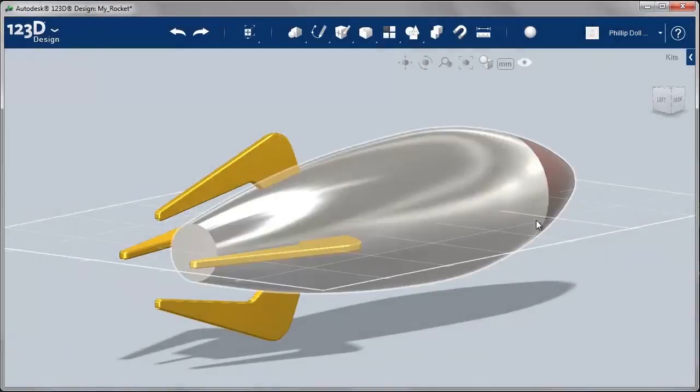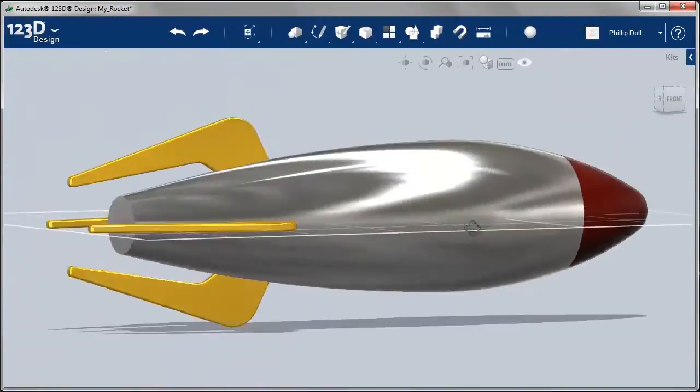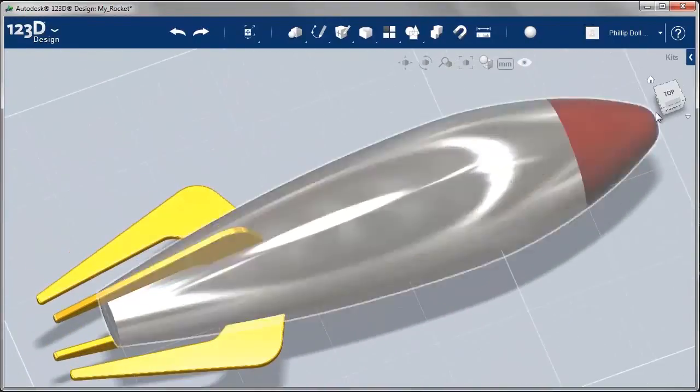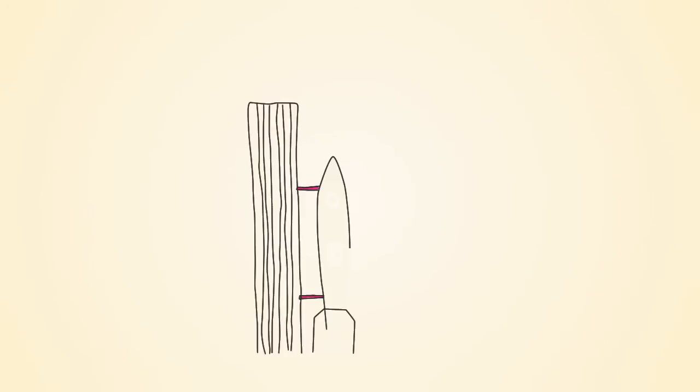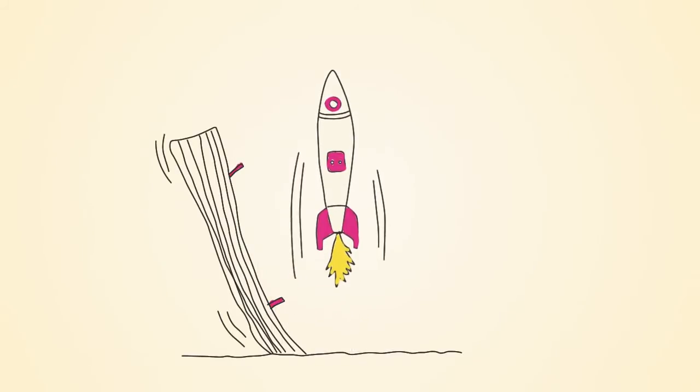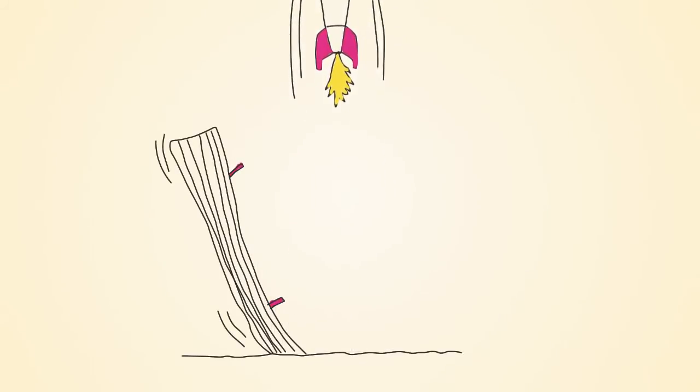In the accompanying student design activity, we are taken through a process of designing a cartoon-like rocket. When a rocket is launched from Earth, it must move upwards through the atmosphere. Therefore, the effect of air resistance must be taken into account for the design.